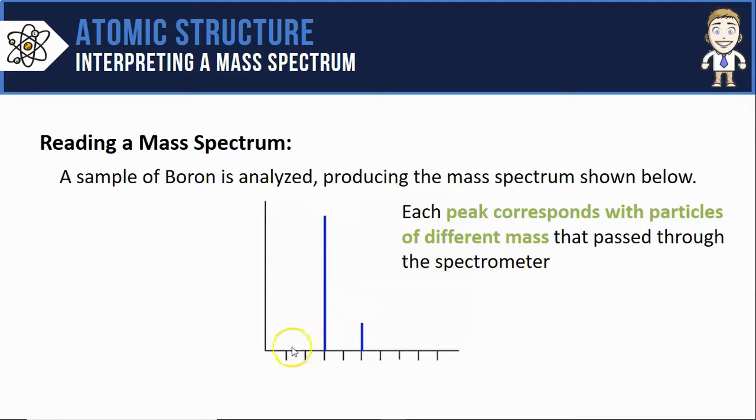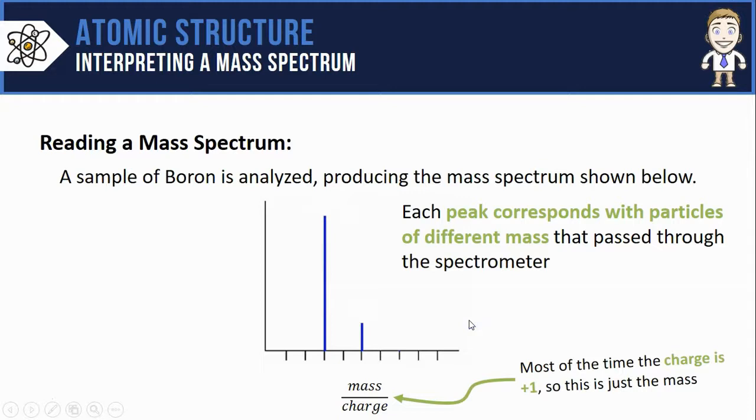That explains what you'll see down here on this horizontal axis. It's going to have the units mass per charge of each particle tested. Now the mass part makes sense. The per charge part or divided by charge part is a little more confusing. Luckily, most of the time the charges of the particles are simply plus one. So that means whatever the mass is, you're just dividing it by one anyway. So the value that's actually plotted on the axis is simply just the mass.